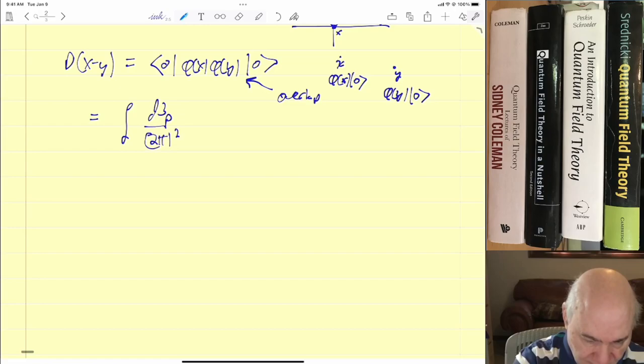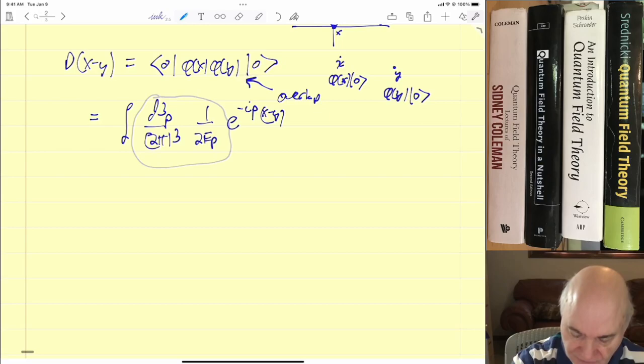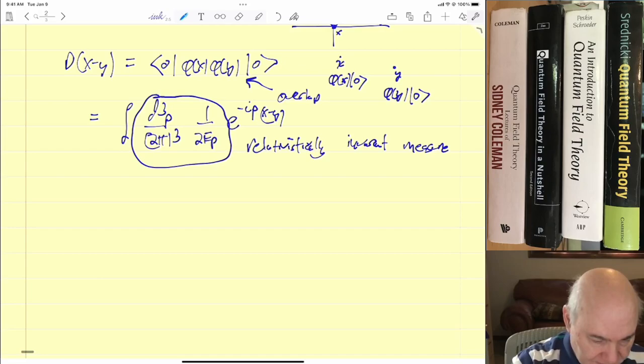That's what this is, so you could think of this as a propagator. Now it's easy to show, if you substitute in the fields, remember the a will kill the vacuum on the right, and the a† will kill the vacuum on the left. So it's easy to show that this is equal to d³p over (2π)³ times 1 over 2Ep, e^(-ip·(x-y)). And remember this whole thing, as Sridnecki defines and as everybody shows, is relativistically invariant measure. So if the rest of this expression, which is obvious in this case, is Lorentz covariant, then the whole integral is Lorentz covariant. So this whole function is Lorentz covariant.